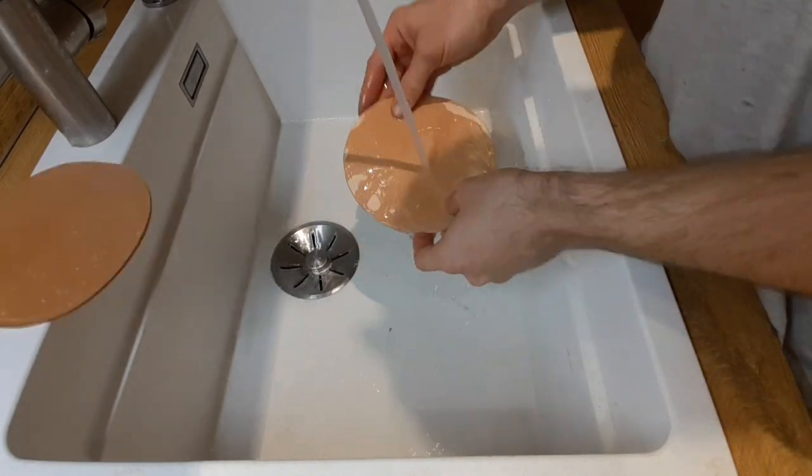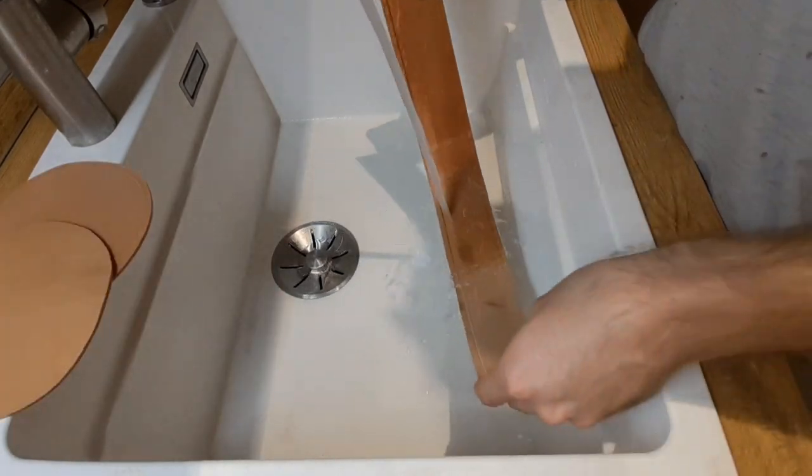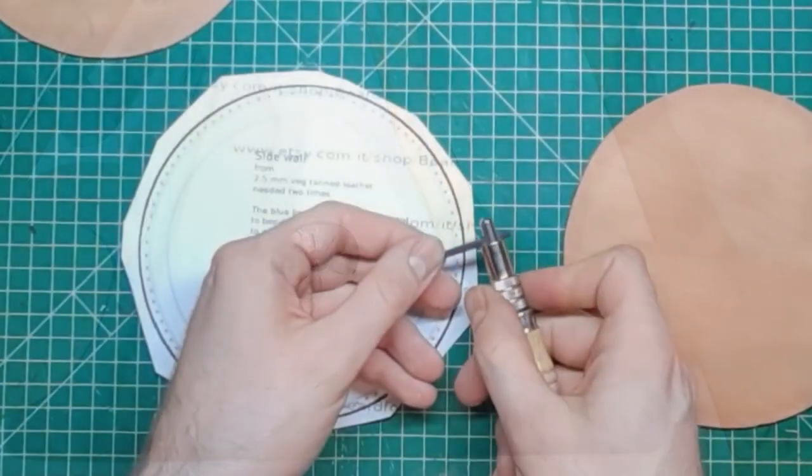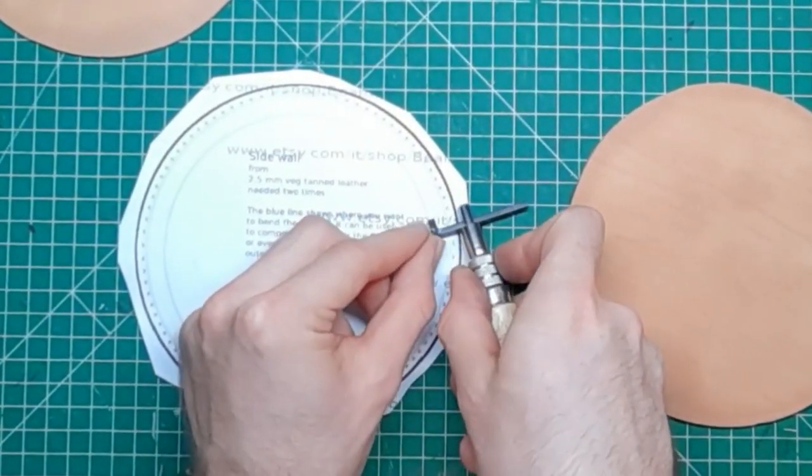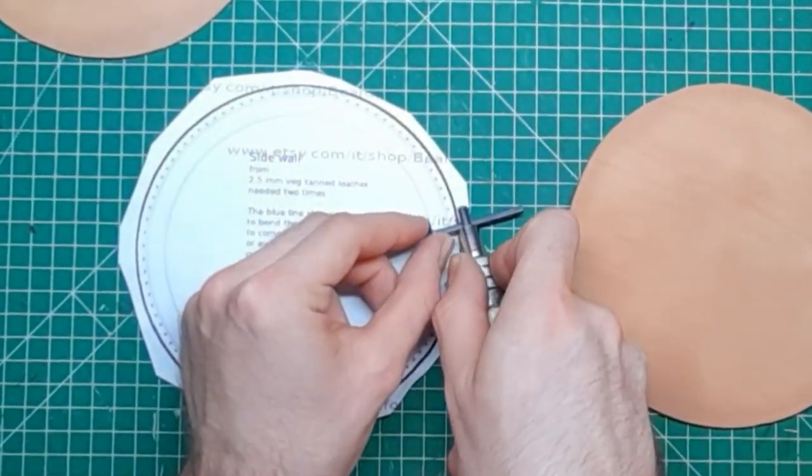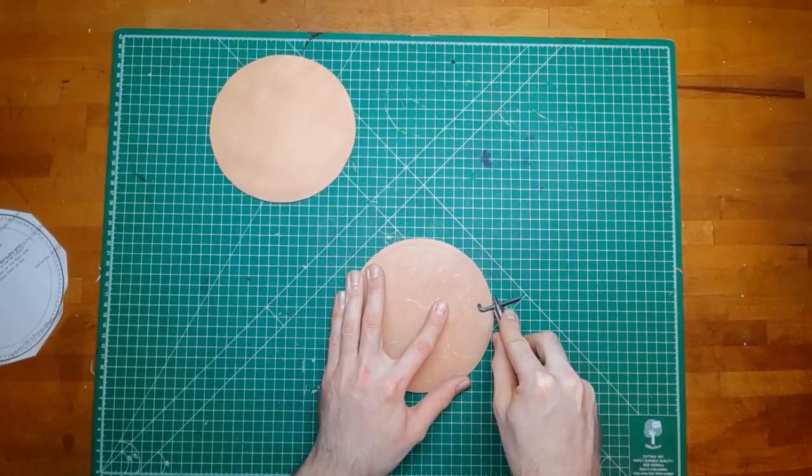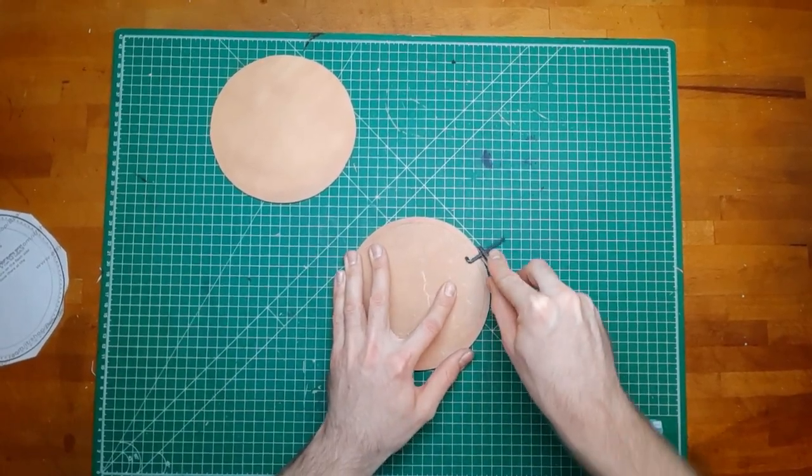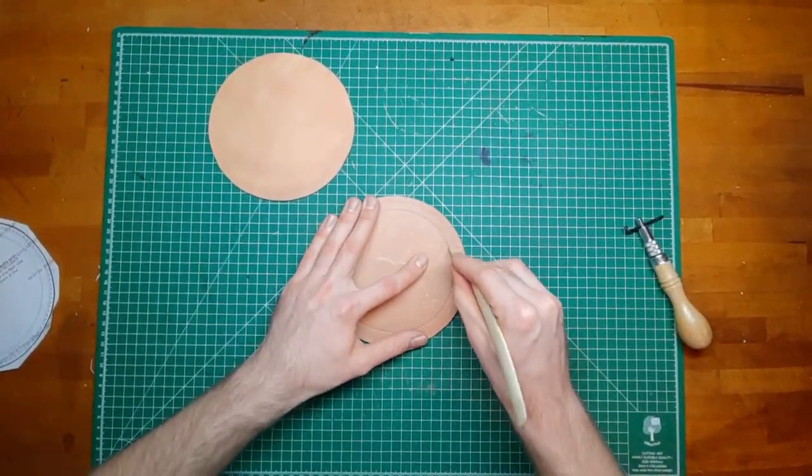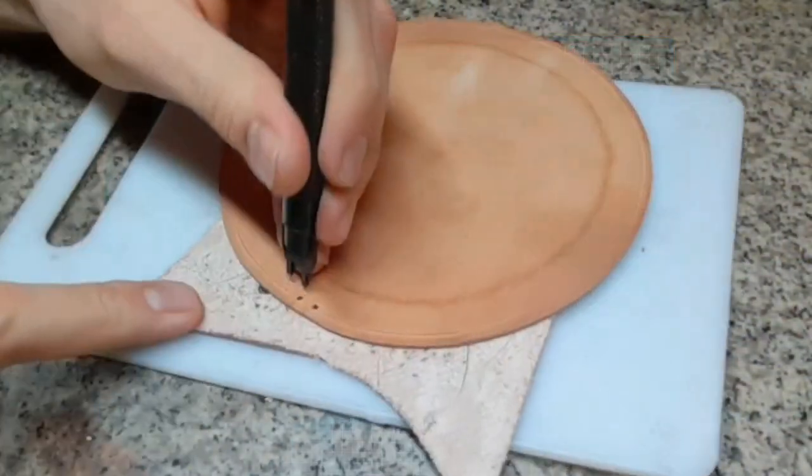Next we are moistening the pieces from both sides. Here I am using a groove cutter in reverse so I do not cut, only mark an area on the flesh side. This guideline helps you preparing the side walls and give it a round shape.